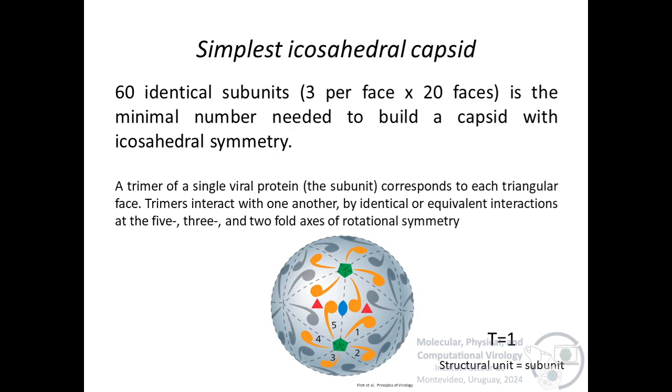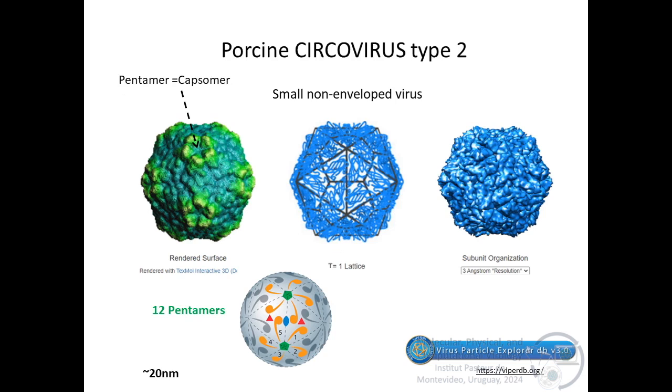Five such triangles interact at each of the 12 vertices in the fivefold axes. Two triangles interact at each twofold axes and three triangles interact at each threefold axes. In the simplest icosahedral capsid, each triangular face of the icosahedron corresponds to a trimer of a single viral protein, the subunits. Since an icosahedron has 20 faces, 60 identical subunits, three per 20 faces, is the minimum number needed to build a capsid with icosahedral symmetry. Each subunit interacts with the others through identical interactions on different axes of rotational symmetry.